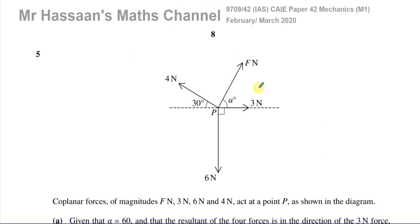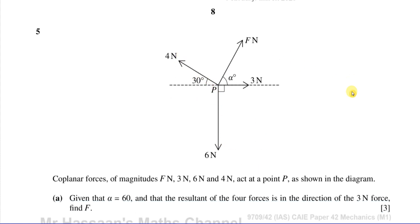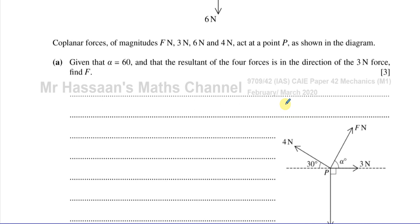This question is about coplanar forces acting on point P. Coplanar forces means they're all on the same plane — they're two-dimensional, not three-dimensional. The forces are of magnitudes F Newtons, three Newtons, six Newtons, and four Newtons, acting at point P as shown in the diagram. Given that alpha equals 60 degrees, I'm going to draw the diagram here. So in part one, this angle is 60 degrees.